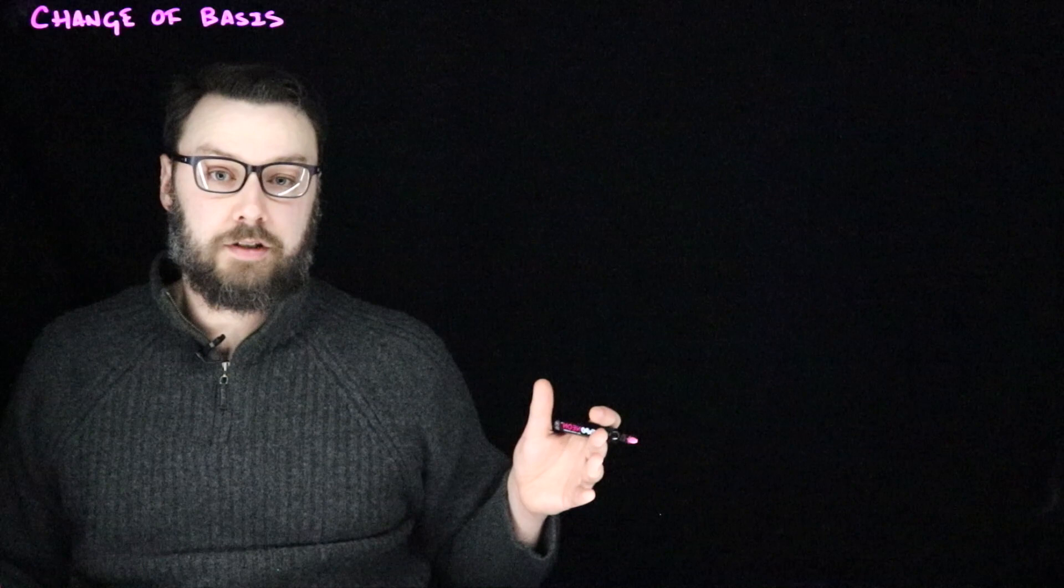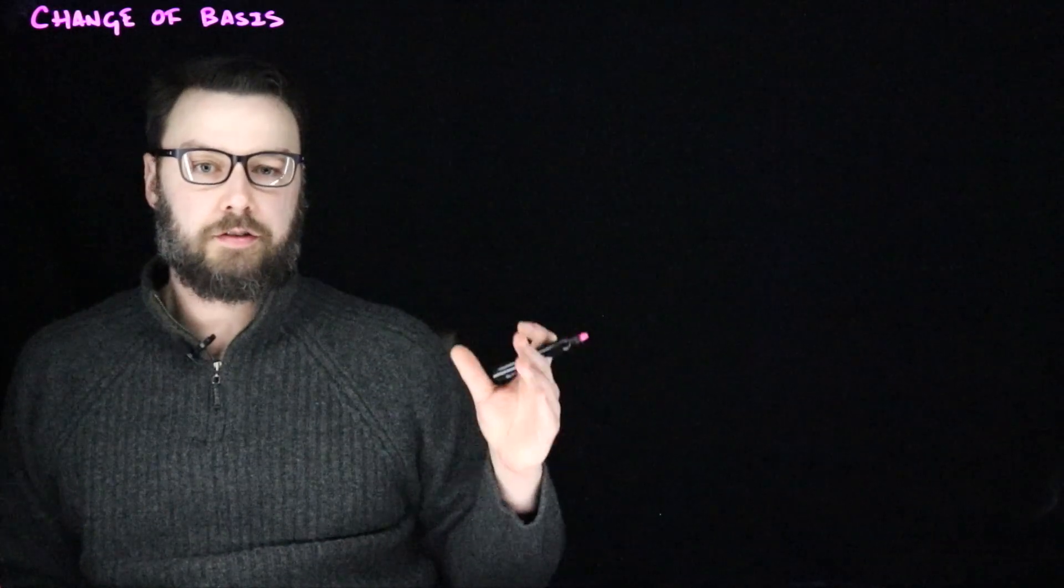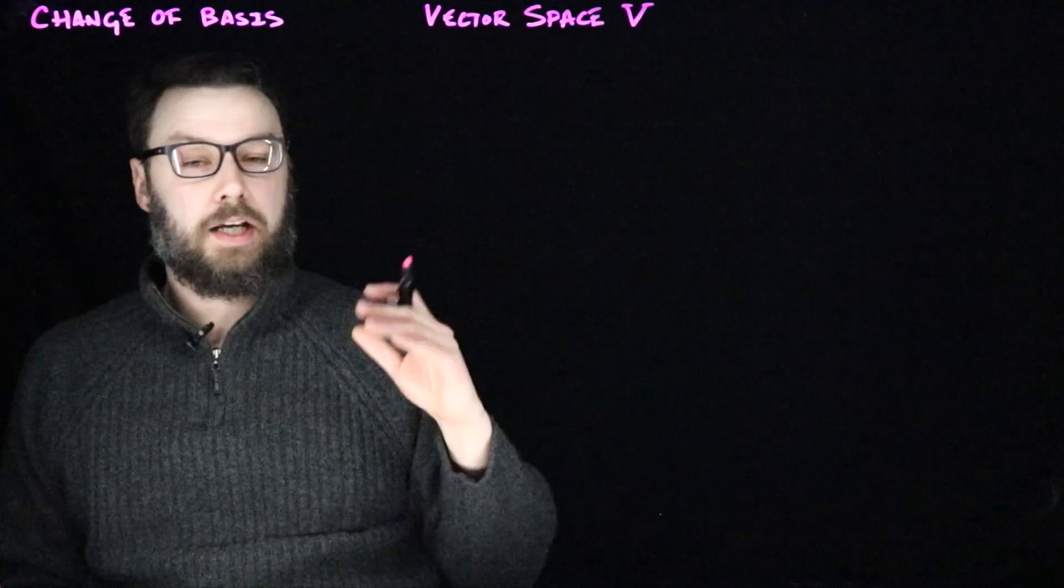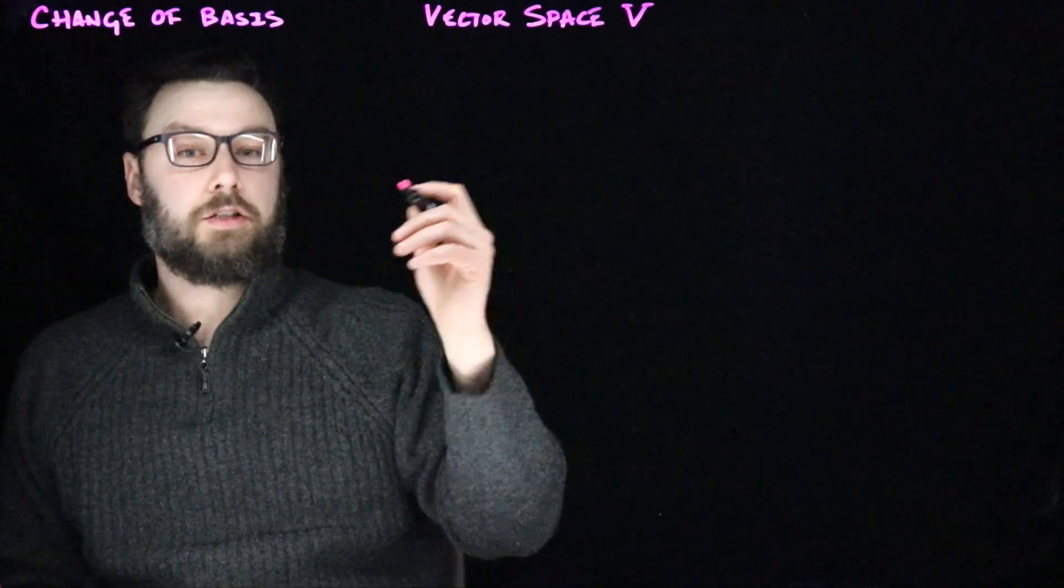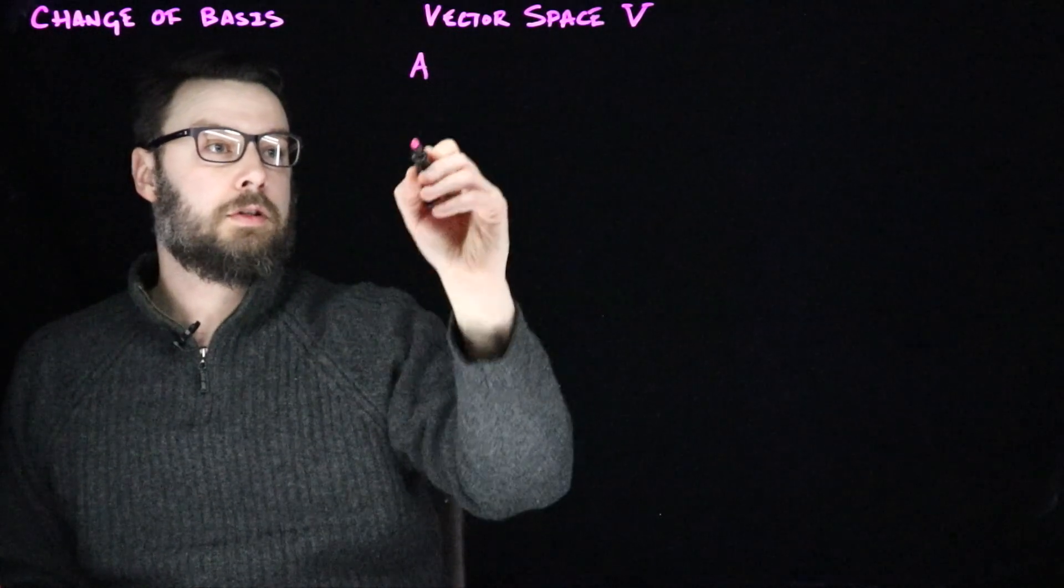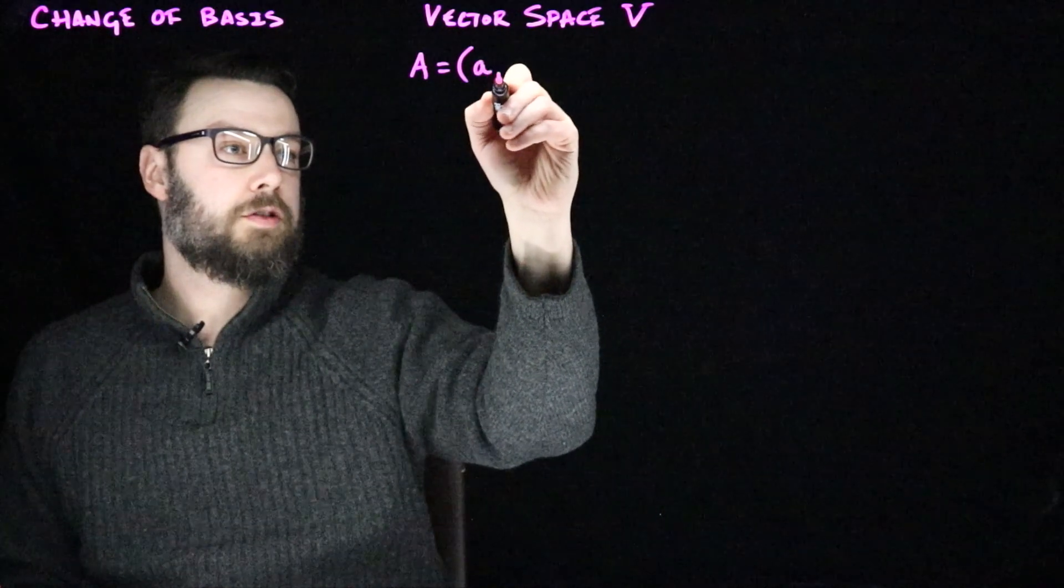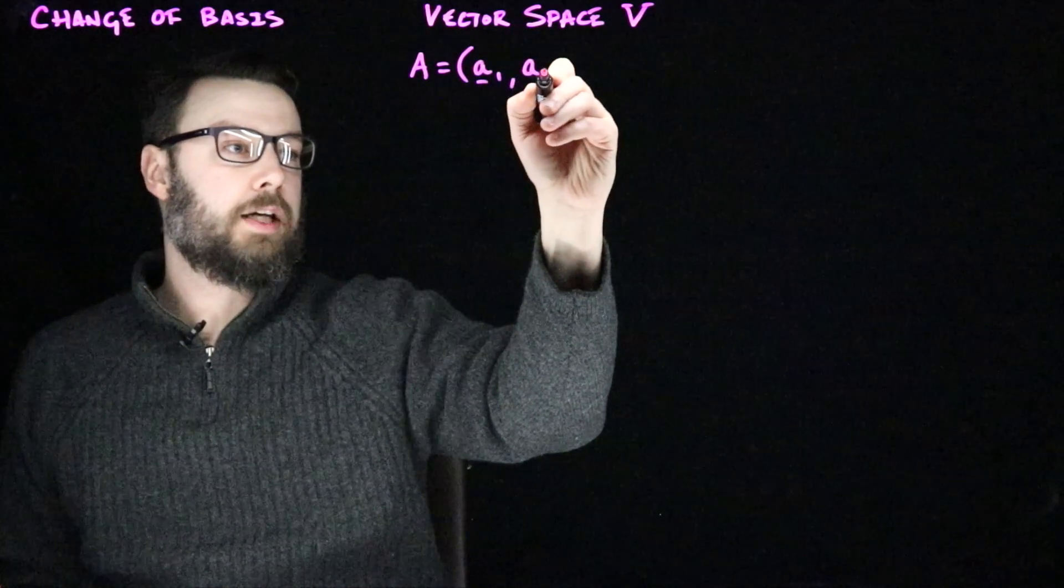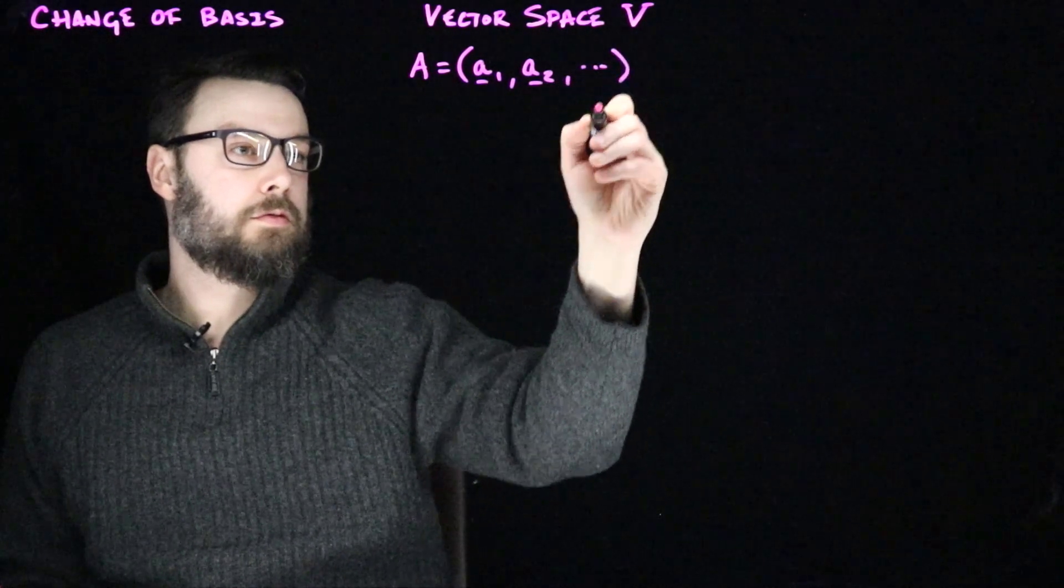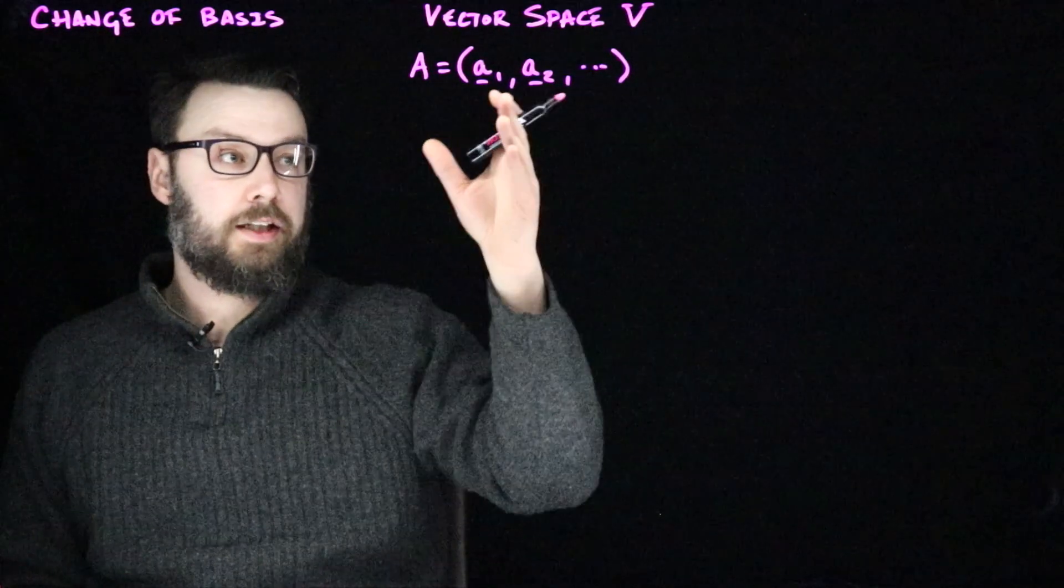You might think of deep learning as a particular scheme for learning really good bases such that simple linear machine learning algorithms can work. Let's imagine that we're in some vector space V. And let's imagine that we have an ordered basis for V. Let's call that ordered basis A. And A is going to be a list of vectors, say a1, a2, and so on.